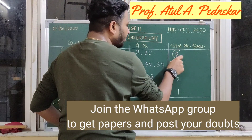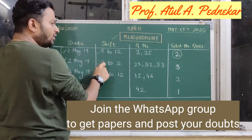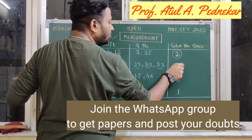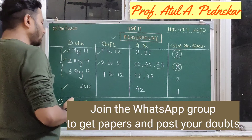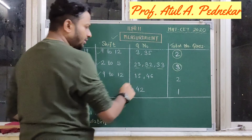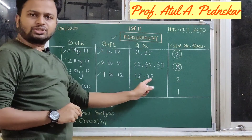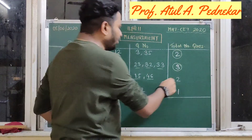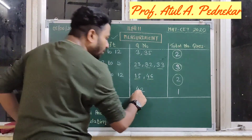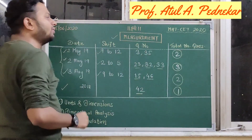So in that paper, there were two questions from this chapter. In the afternoon shift, question number 23, 32, and 33 — meaning three questions were from the chapter of measurement. On the next day, 3rd May 2019, morning shift, there were two questions from this chapter: question number 15 and question number 46. For 2018, question number 42 — meaning only one question was from the chapter of measurement.